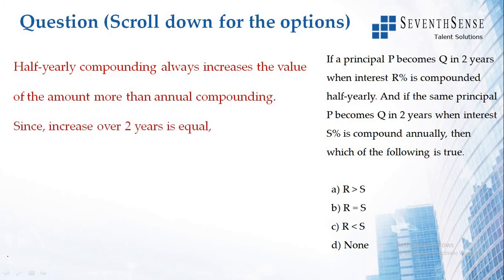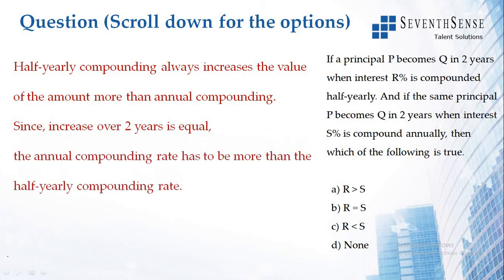Since the increase over 2 years is equal, the annual compounding rate has to be more than the half yearly compounding rate. That is why S percentage is greater than R percentage. So your answer is option C.